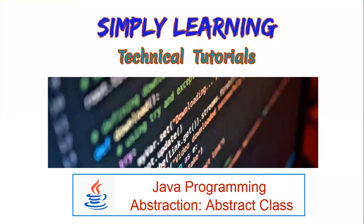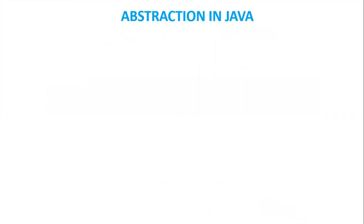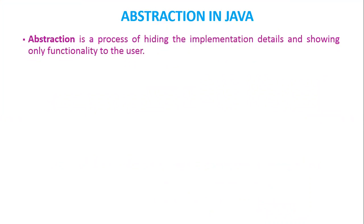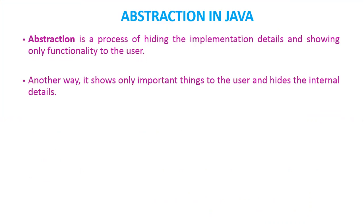Hello friends, today we are going to discuss abstraction and abstract class in detail. Abstraction is the concept of object-oriented programming that shows only essential attributes and hides unnecessary information. The main purpose of abstraction is hiding the unnecessary detail from the user.